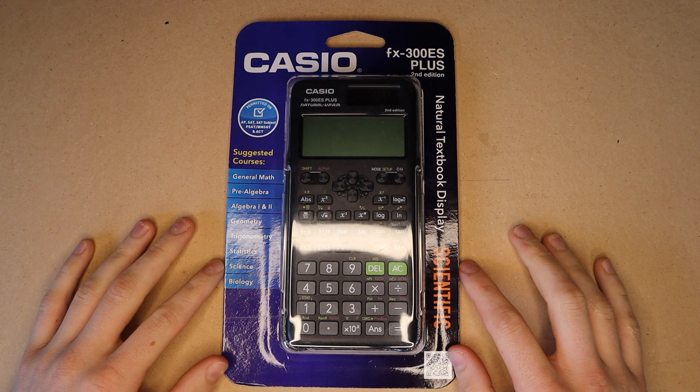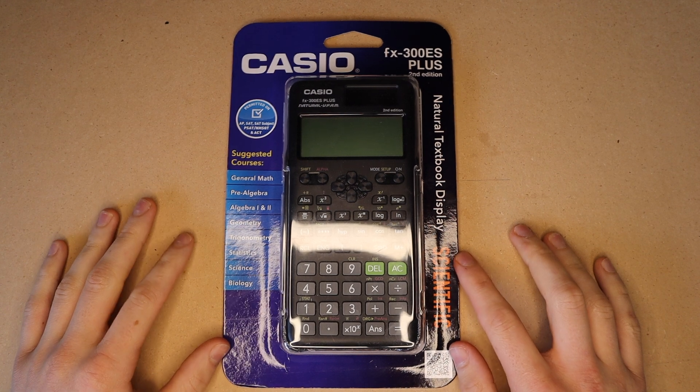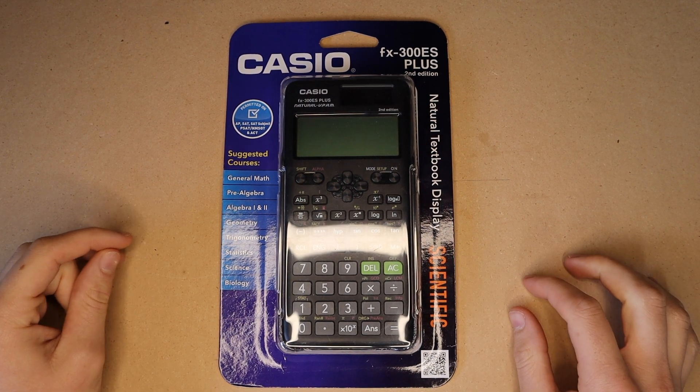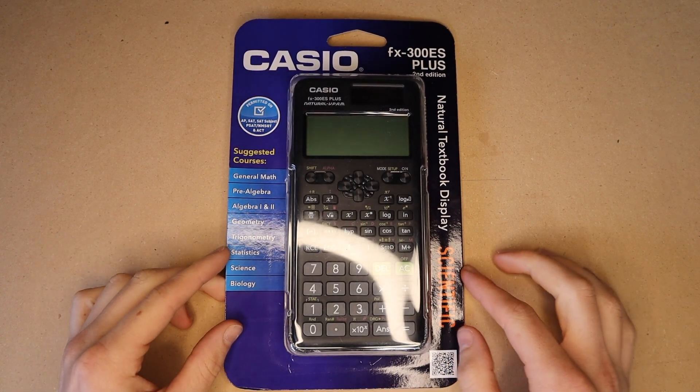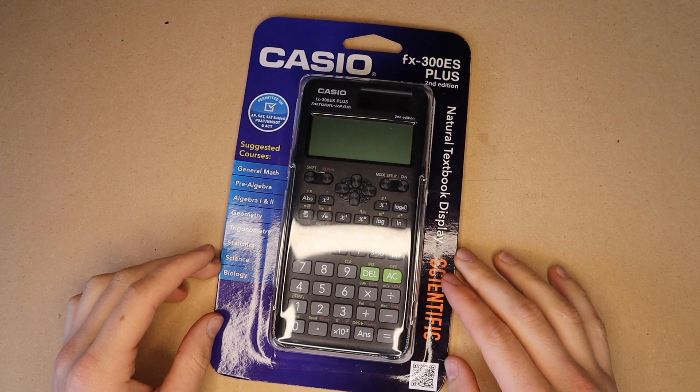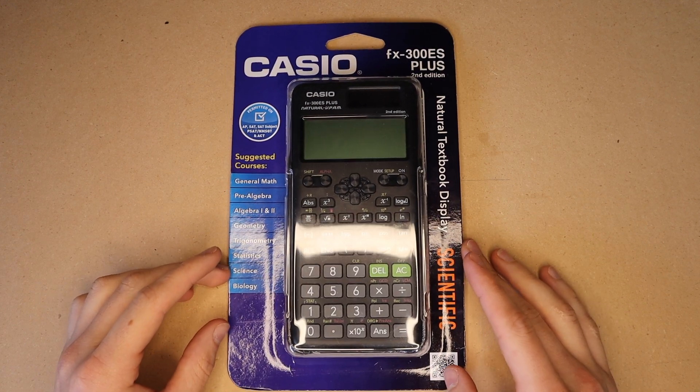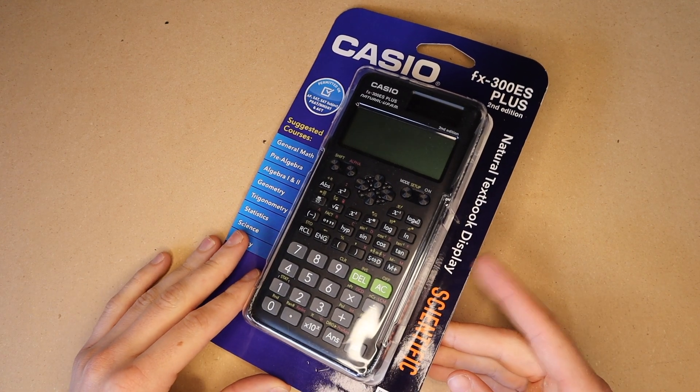This is going to be a review of the Casio FX300ES Plus scientific calculator. In stores and on Amazon you can expect to find this calculator for around $10. When I bought this at Target it was on sale so I only paid $8, but you should expect to find it almost anywhere for between $8 and $12.